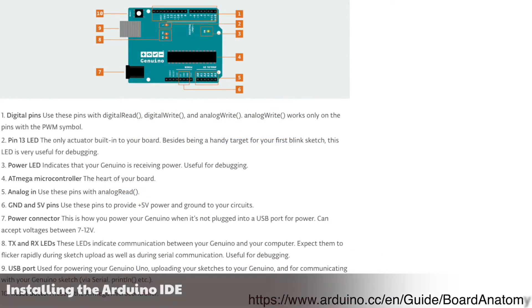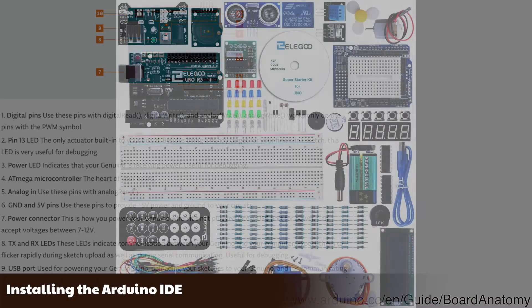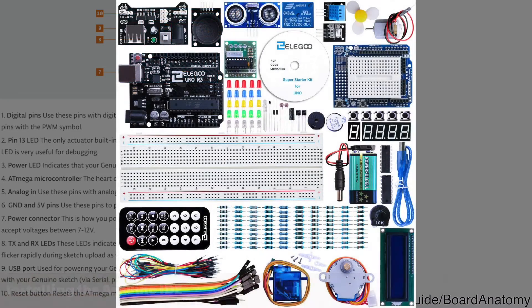Now let's finally take a look at the Uno Rev 3. I bought a starter kit from Elegoo that included an Elegoo-branded and produced board with a bunch of components like LEDs, wires, buttons, motors, etc. It seemed like a great collection to start experimenting with.